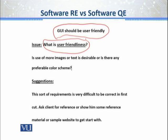Rather than blindly starting to develop the design, get approvals as a mitigation plan. Generally, the client is asked for their preferred color scheme, reference websites, or reference material. Ask them to share these, or share multiple reference websites with them to get a starting point — because turning textual descriptions into visuals is not an easy thing. Whenever you write a requirement like 'user friendliness should be there,' it is an open-ended question. Break it down step by step — in step one, go for reference websites or reference material.